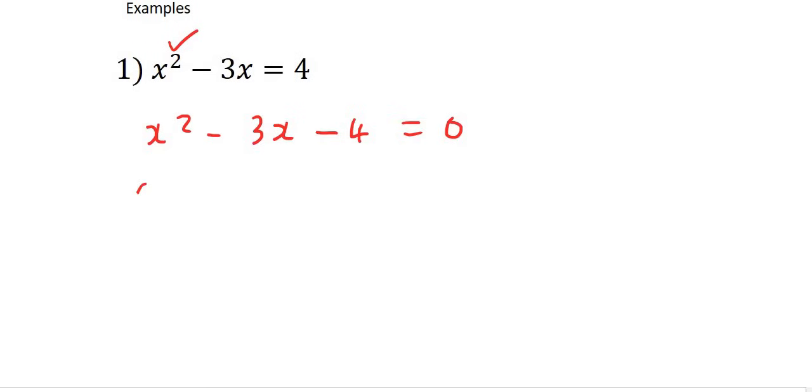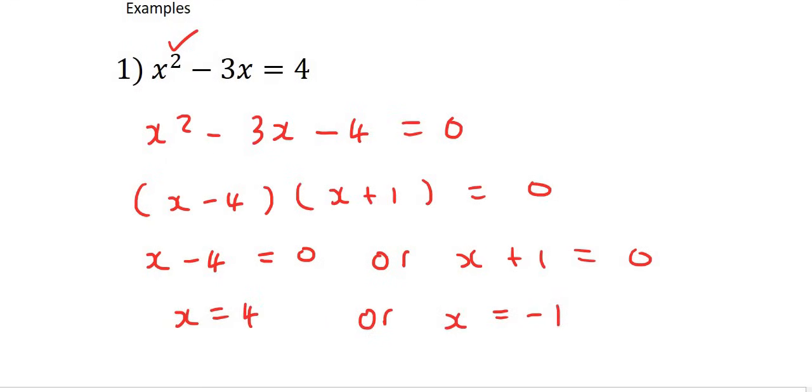What we now do is we factorize. This is a trinomial, so it's going to be x minus 4 and x plus 1. I then say x minus 4 is equal to 0, or x plus 1 is equal to 0. This then gives me x is equal to 4, or x is equal to negative 1.